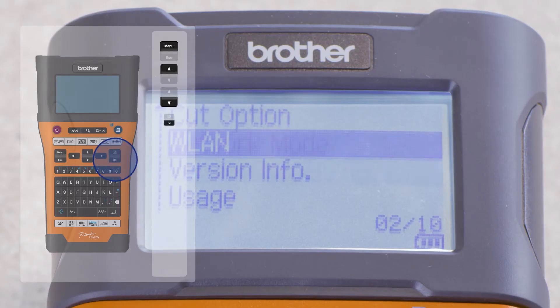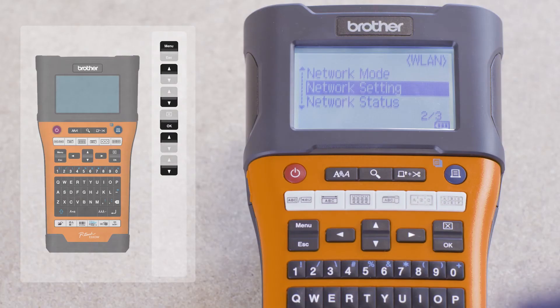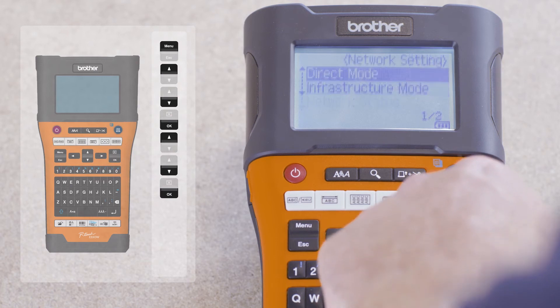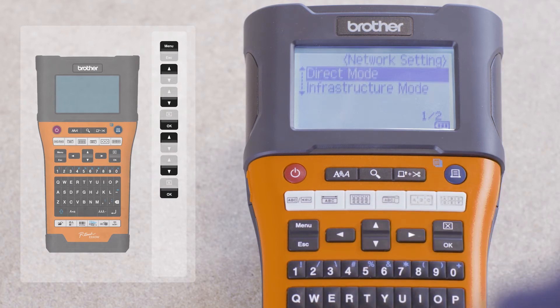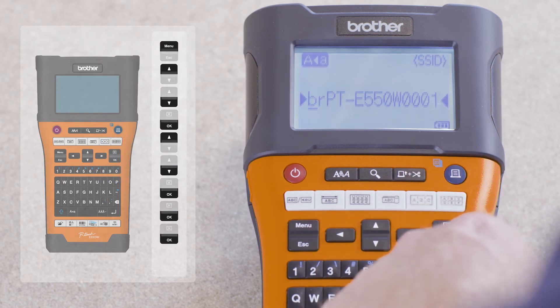Click the OK button and scroll to the network settings option. Click OK and select the direct mode option. Click OK to see the printer name, then click OK to view the Wi-Fi password.